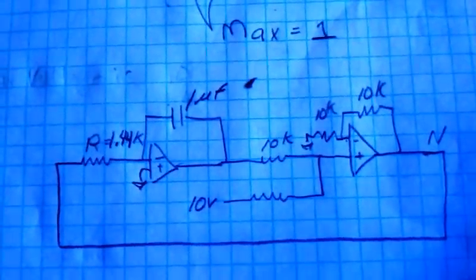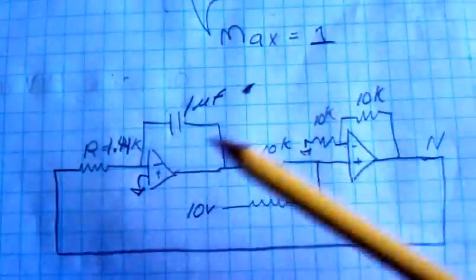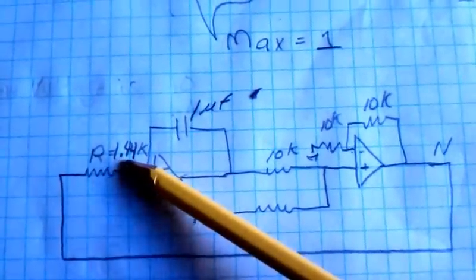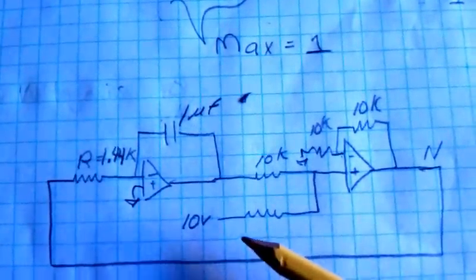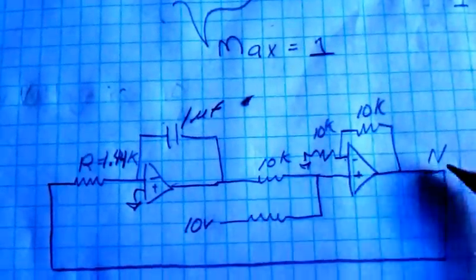And here would be the final circuit. R, 1.44 K, the capacitor of the integrator, one microfarad, 10 volt initial condition.